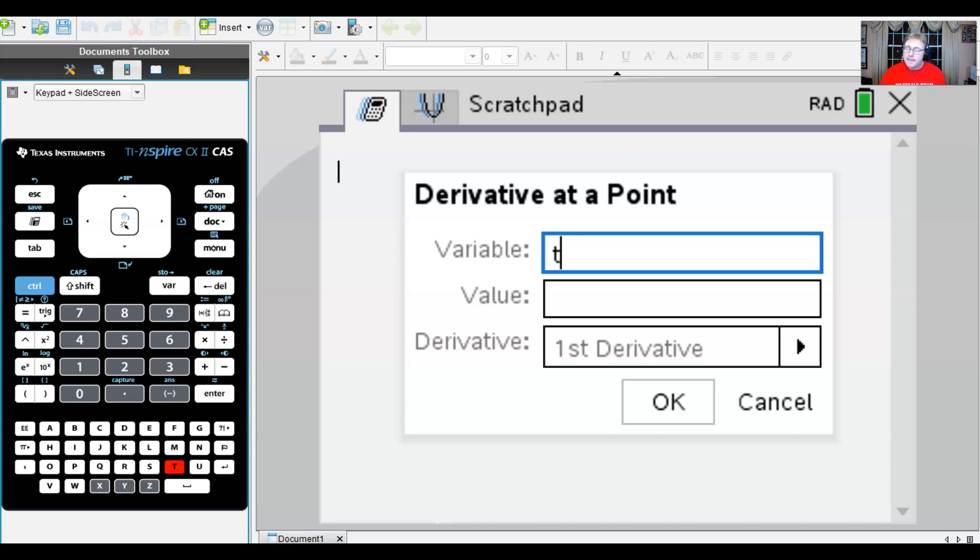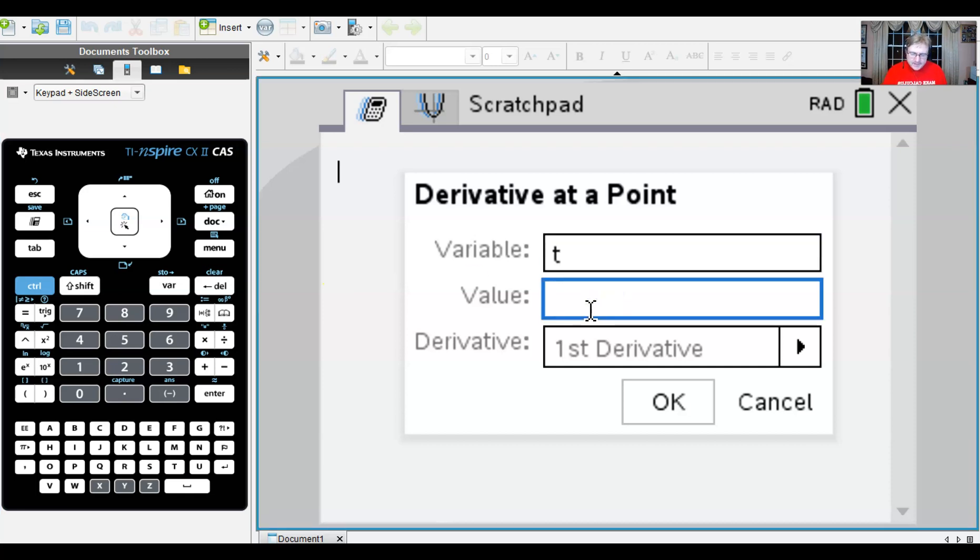So if I want to enter this problem exactly the way that it's worded, I might use the variable t because that was the variable within my original question. There's nothing wrong if you want to change that variable to x. Sometimes I think that's a good idea because you can then use that equation that's generated and you could actually graph it.